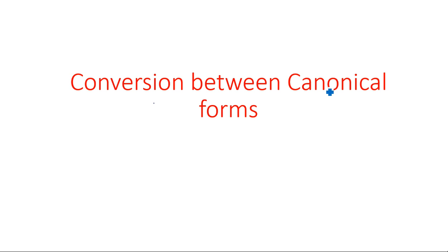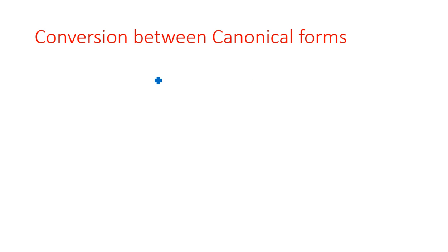Hi everyone. In this video I am going to explain the conversions of canonical forms from min term to max term and max term to min term. In the previous video I explained what min term and max term mean. Min term is a product form, and max term is an addition form — for example, a+b is a max term and a·b is a min term.